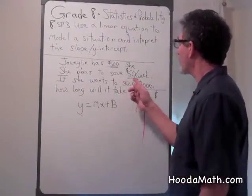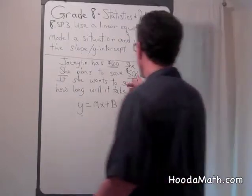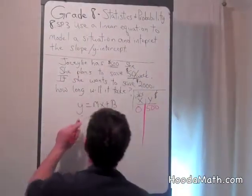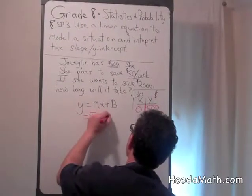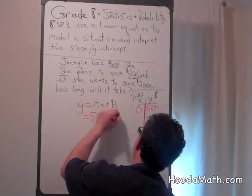Well, we have to first find out what is the slope. The slope is 50. 50x plus the $500 she already has.